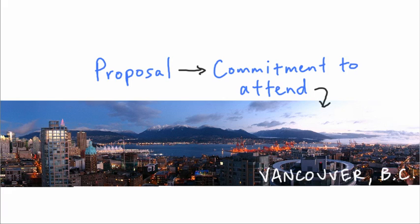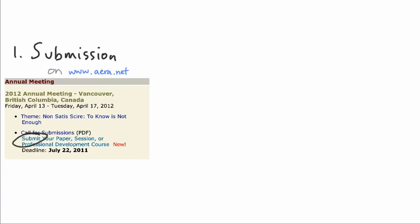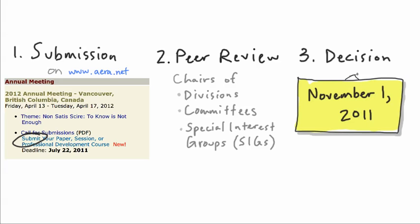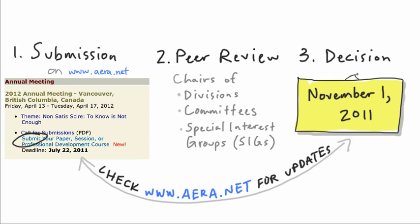Reviewers want to know that if they pick you, you'll be there. Once your proposal is submitted through the AERA website, it goes through a peer review process involving the program chairs of divisions, committees, and special interest groups. You'll find out if your proposal is accepted when reviewers inform you of their decision on November 1, 2011. In the meantime, you can check the AERA website periodically for updates.